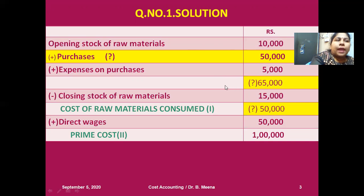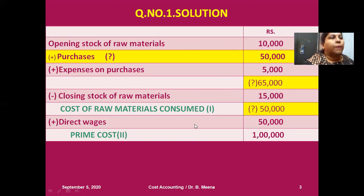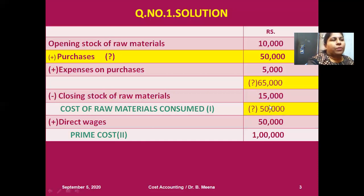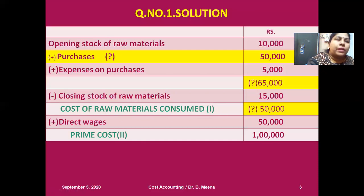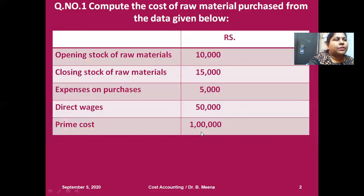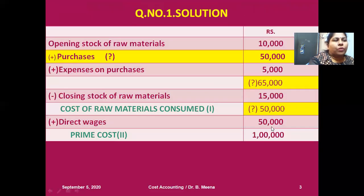The yellow-colored items I have to calculate after getting the information from the prime cost calculations. So I put a question mark there as well. Minus closing stock of raw materials 15,000. After deducting the closing stock of raw materials, I will get one resulting answer — that I also don't know, so I put a question mark. That resulting answer, as per the cost sheet format, is called cost of raw materials consumed. And then plus direct wages — I have that information. The direct wages from the problem is 50,000.